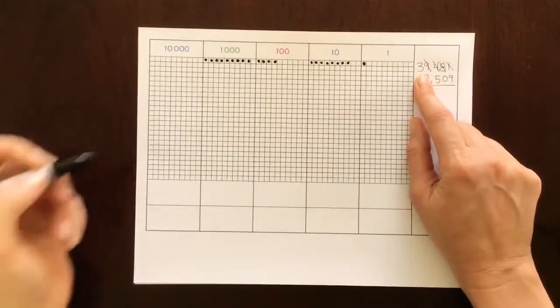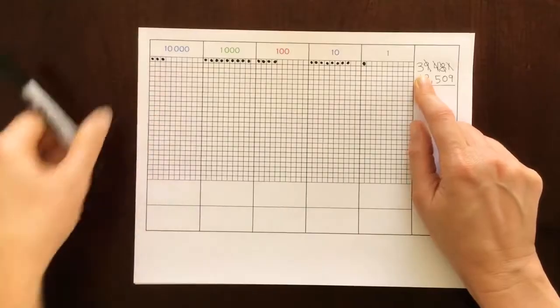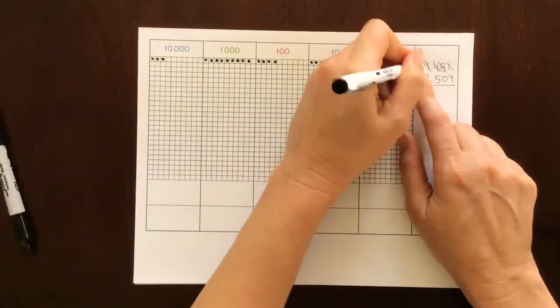And then the ten thousands place and we have three: 1, 2, 3.